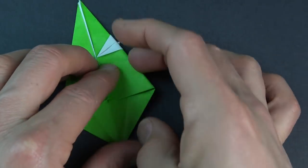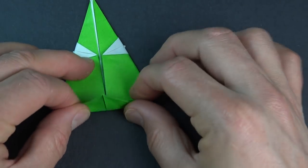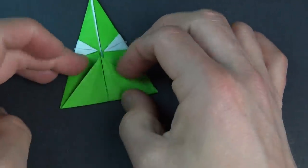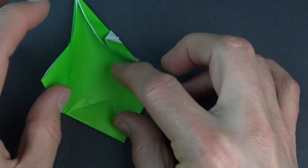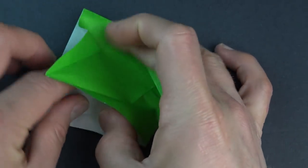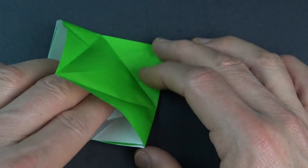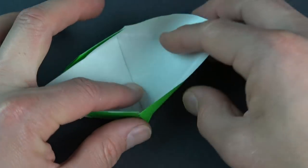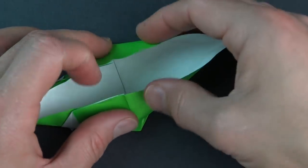And rotate and fold this flap over these edges. And unfold. And now lift up the front layer and we're going to petal fold. So fold on this crease, so we have the boat, collapse the boat.